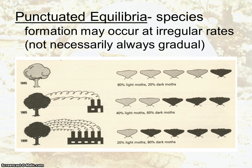These are some examples of patterns of evolution: divergent evolution, convergent evolution, and then gradualism versus punctuated equilibrium.